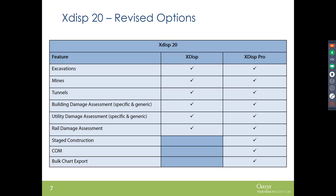There is an advanced version of XDISP called XDISP Advanced. It does everything the normal version does but also allows staged construction — useful for basements and tunnels advancing in stages. It supports automation via a COM feature for clients with BIM requirements, and it has bulk chart exports, which helps organize hundreds or even nearly a thousand assets for customers and clients.